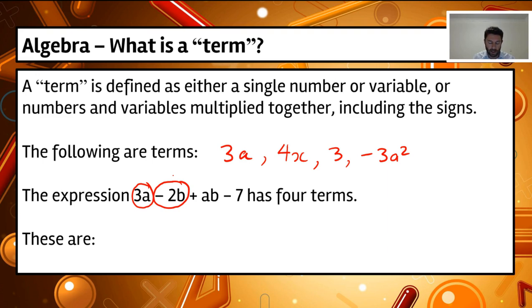So we're actually going to add that minus sign with the 2b. So anything in front of a term, we've got the plus ab there, and we've also got minus 7. So the four terms in there are 3a minus 2b plus ab, or just ab, and minus 7.